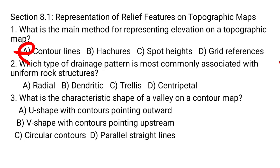Question number 2: Which type of drainage pattern is most commonly associated with uniform rock structure? A. Radial. B. Dendritic. C. Trellis. D. Centripetal. The dendritic drainage pattern is most commonly associated with uniform rock structure — B is the correct answer. Let's discuss why A, C, and D are not the answer.